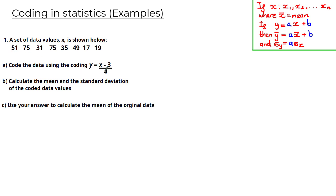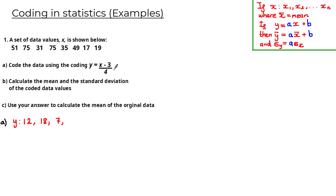Starting with 51 and substituting into this equation, we get (51 − 3) / 4 = 12. Substituting 75 gives (75 − 3) / 4 = 18. Substituting 31 gives 7. And substituting the rest of the values gives us the remaining coded values of y.